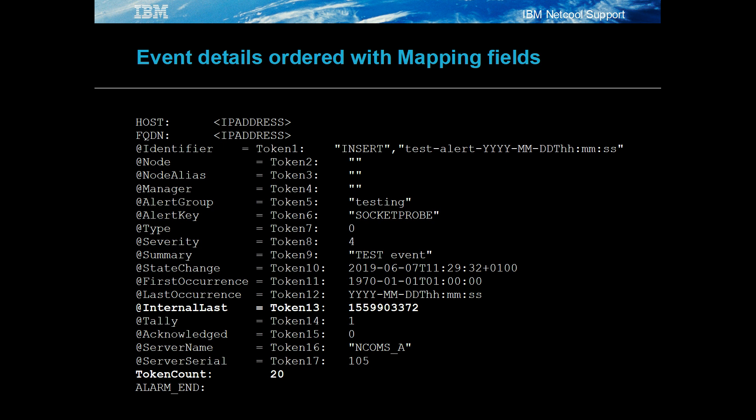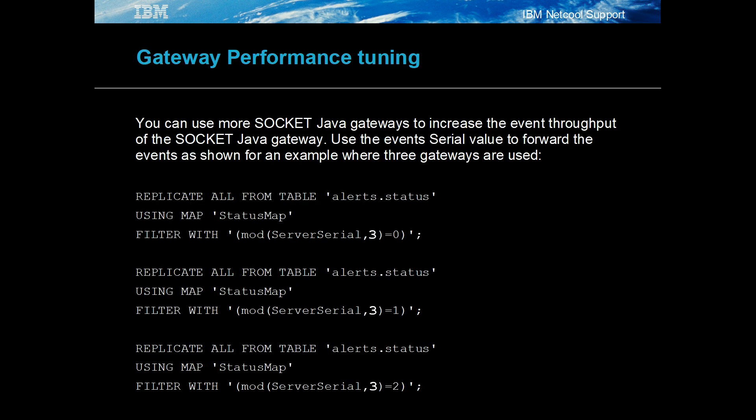The internal last field was successfully converted to a string in token 13. The best way to improve the Socket Java Gateway's performance is to run more Socket Java Gateways, as the event processing is serial and runs through a single process. The way to do this is by dividing the event load between gateways using events' serial number. In this example of using three gateways, each Socket Java Gateway uses a filter with mod 3 of server serial, with each gateway forwarding its own third of the matching events.